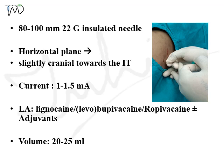We need an 80 to 100 mm, 22-gauge insulated nerve block needle for this block. The needle is inserted in a horizontal plane and directed somewhat cranially towards the ischial tuberosity. The initial current requirement is around 1 to 1.5 mA, gradually decreased to 0.3 to 0.5 mA. For local anesthetic, you can use lignocaine, levobupivacaine, or ropivacaine with or without adjuvants. The concentration for anesthesia is 0.5% or higher, and for analgesia 0.25%. The volume requirement is around 20 to 30 ml.